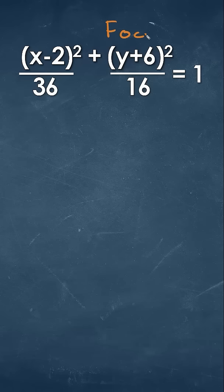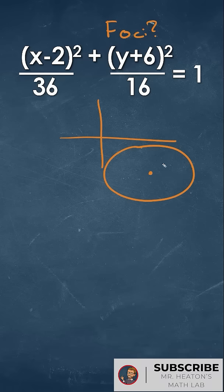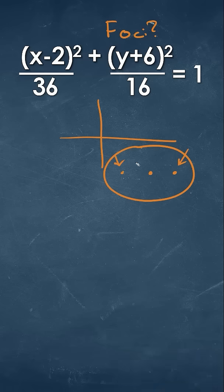So how do you figure out the foci for an ellipse? Well, if you remember, the foci are going to be these anchor points that we have on our ellipse, where we have our center here, and we have our foci, or each focus is going to be to the left and right of that center.